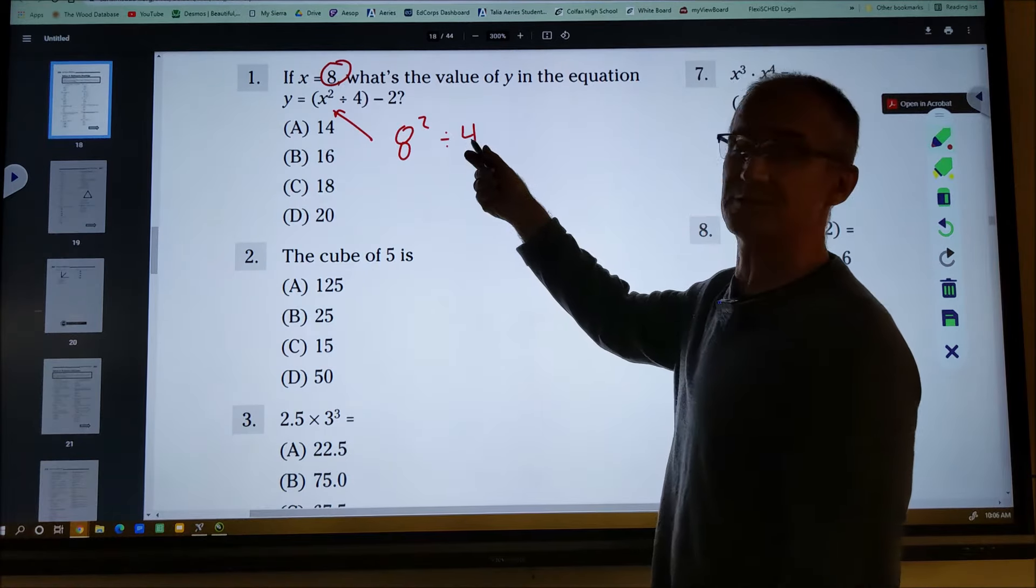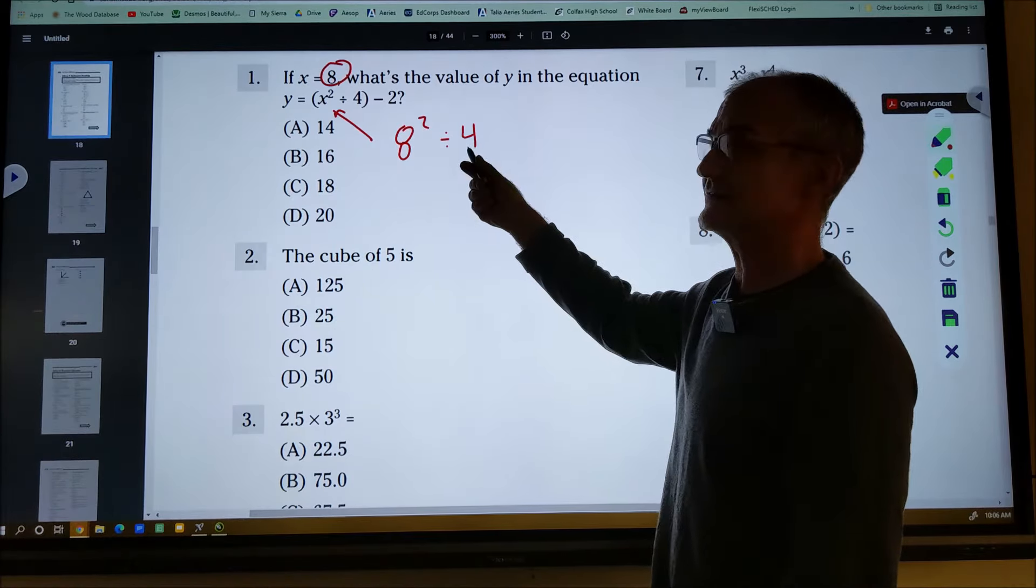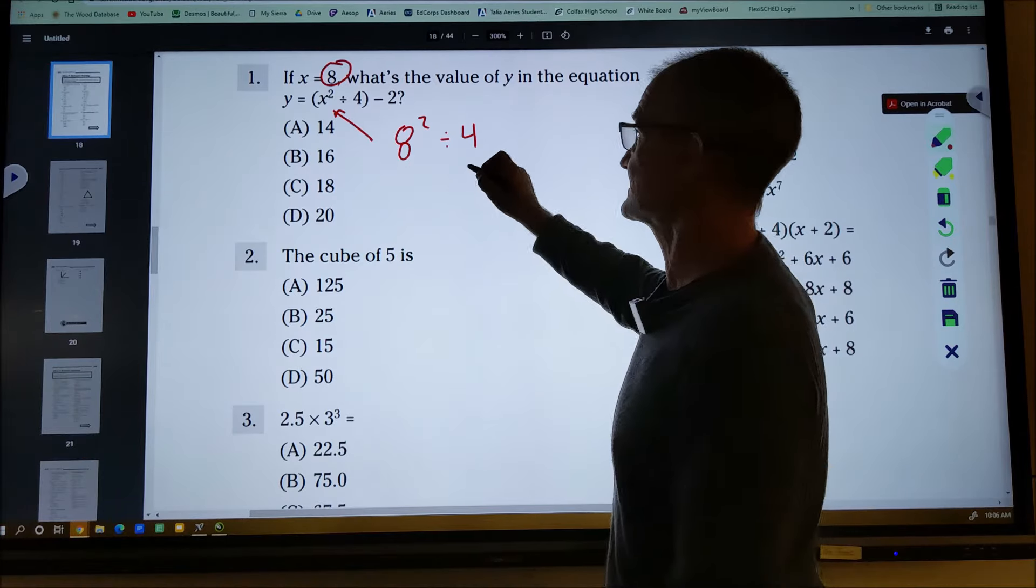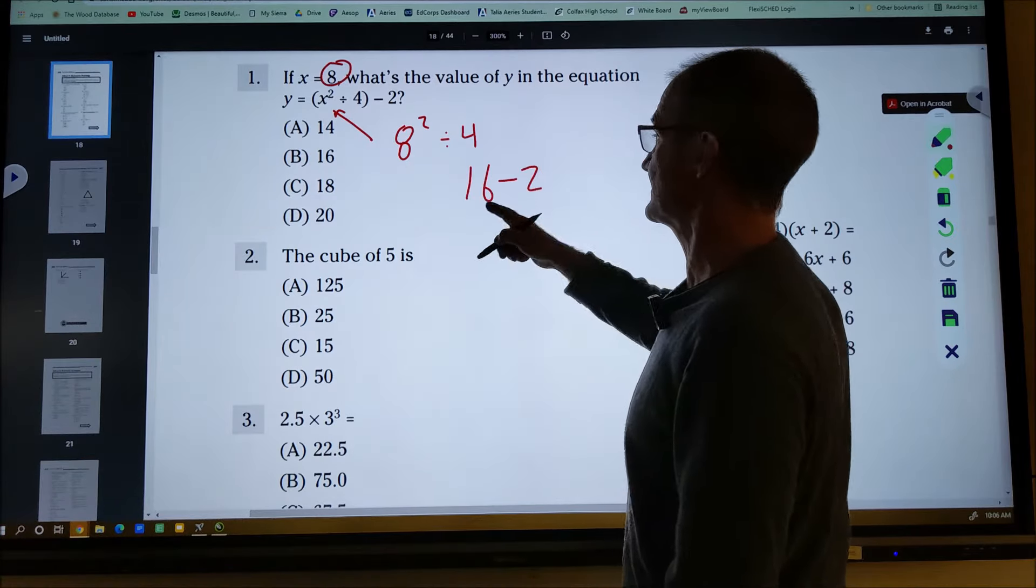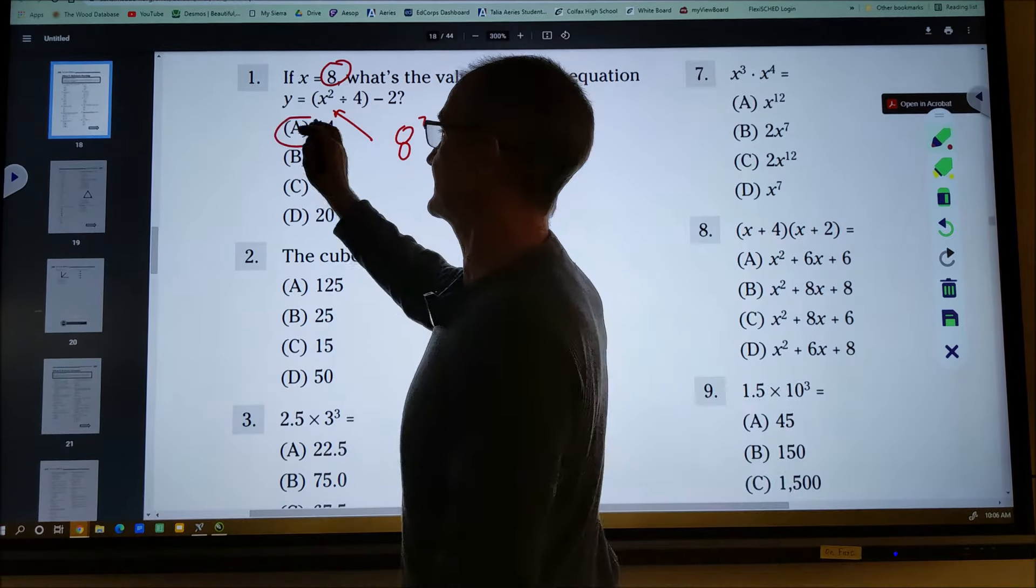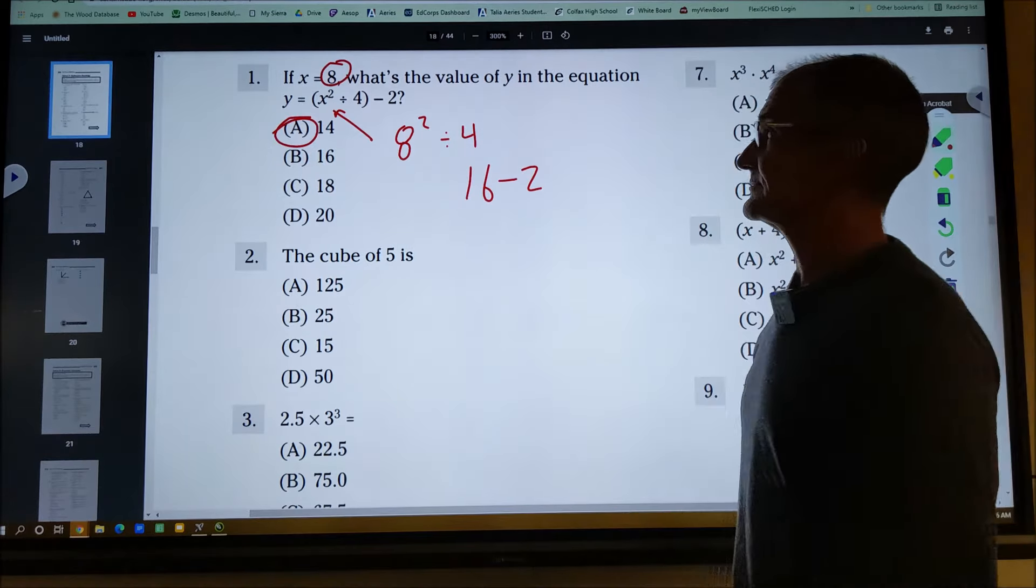You have to do exponents before division. 64 divided by four. I'm going to cut it in half to get 32. Cut that in half to get 16. Then I have 16 minus two or 14. So there's my answer right there.